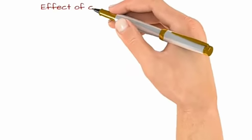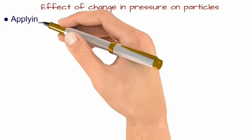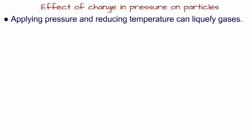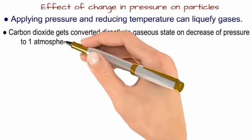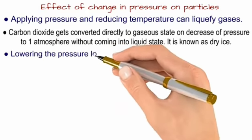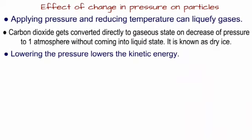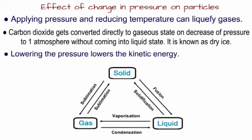Now we will study the effect of changing pressure on particles. Applying pressure and reducing the temperature can liquefy gases. Carbon dioxide gets converted directly into solid state on decreasing the temperature to 1 atmosphere without coming into liquid state. It is also known as dry ice. Lowering the pressure also lowers the kinetic energy. Let us look at the conversion chart where solid, gas and liquid fuse and solidify.